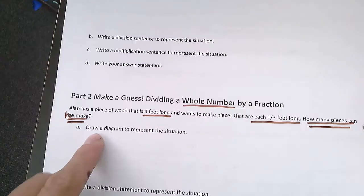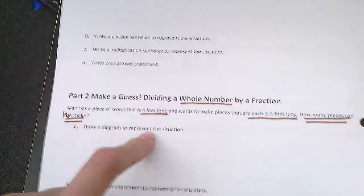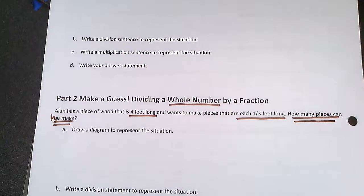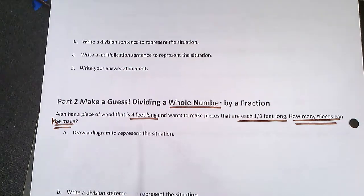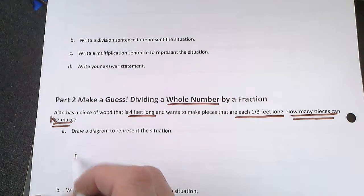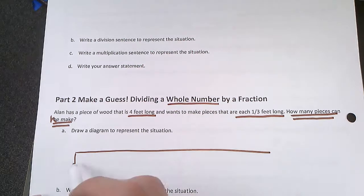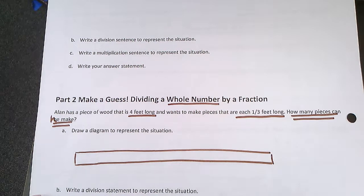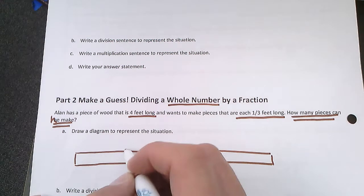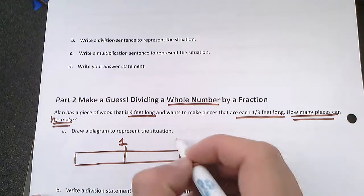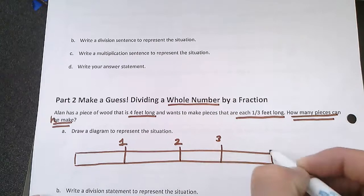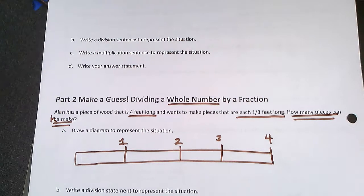The first part is asking us to draw a diagram to represent this situation. One way is with a tape diagram. The full piece of wood is 4 feet long, so let's draw that first. We split it into feet: 1, 2, 3, and 4 feet. So now we have our 4-foot piece of wood.